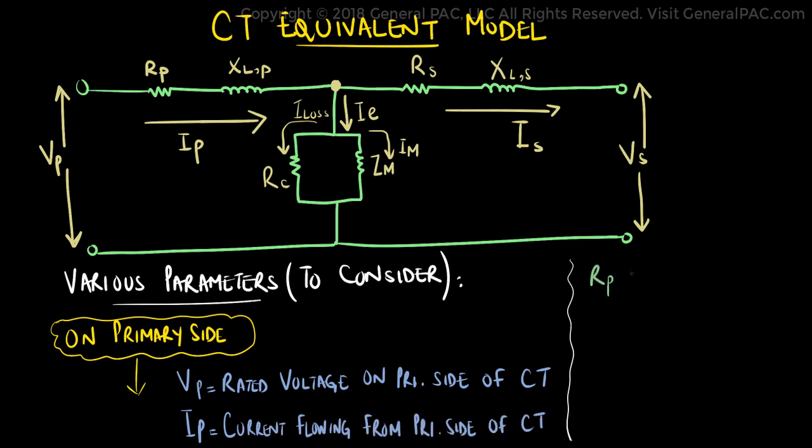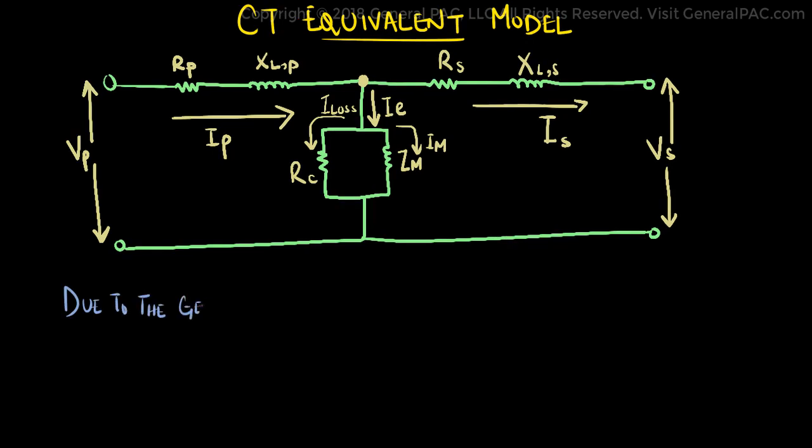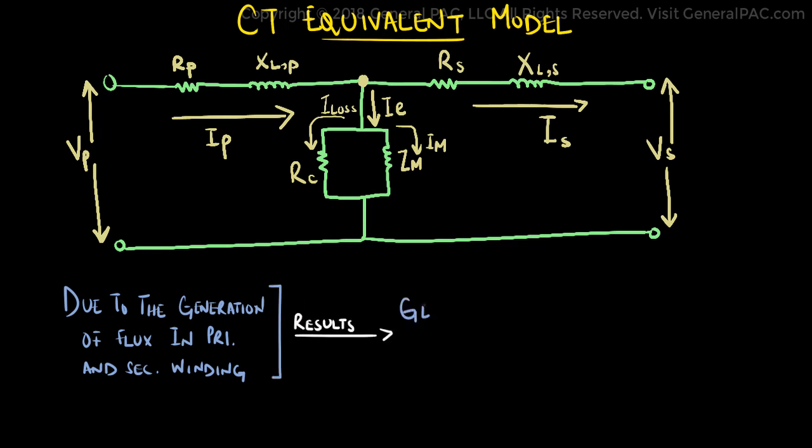The resistance components, RP and RS, are impedance parameters driven by CT construction, and due to the generation of flux in the primary and secondary windings, this results in the generation of a leakage reactance, which can be observed in the equivalent model on both sides.